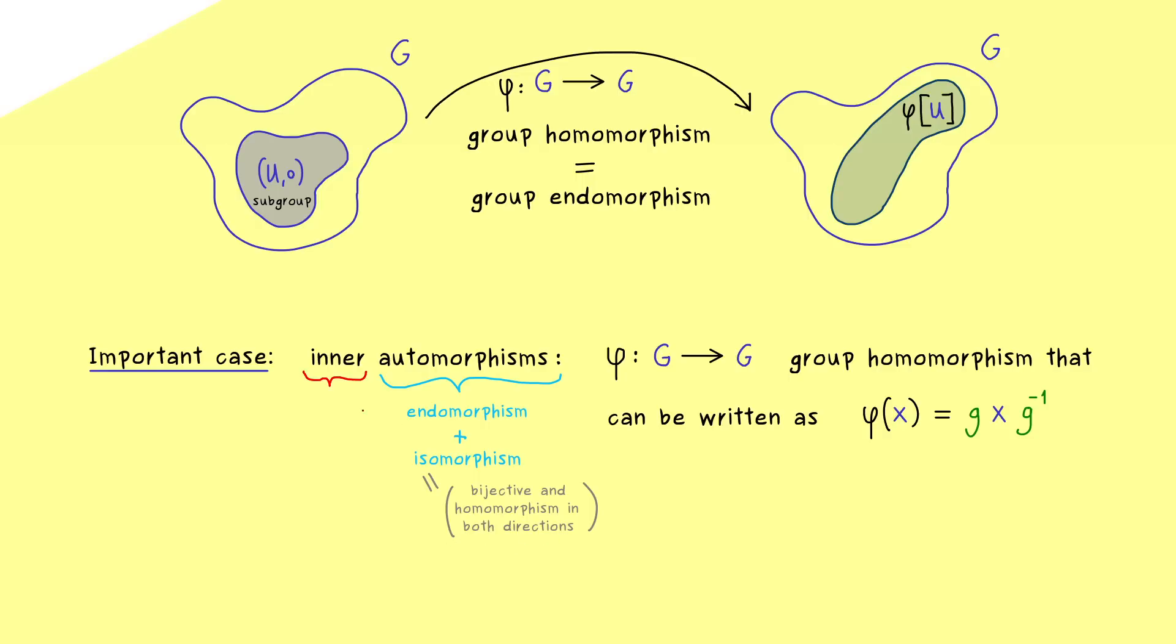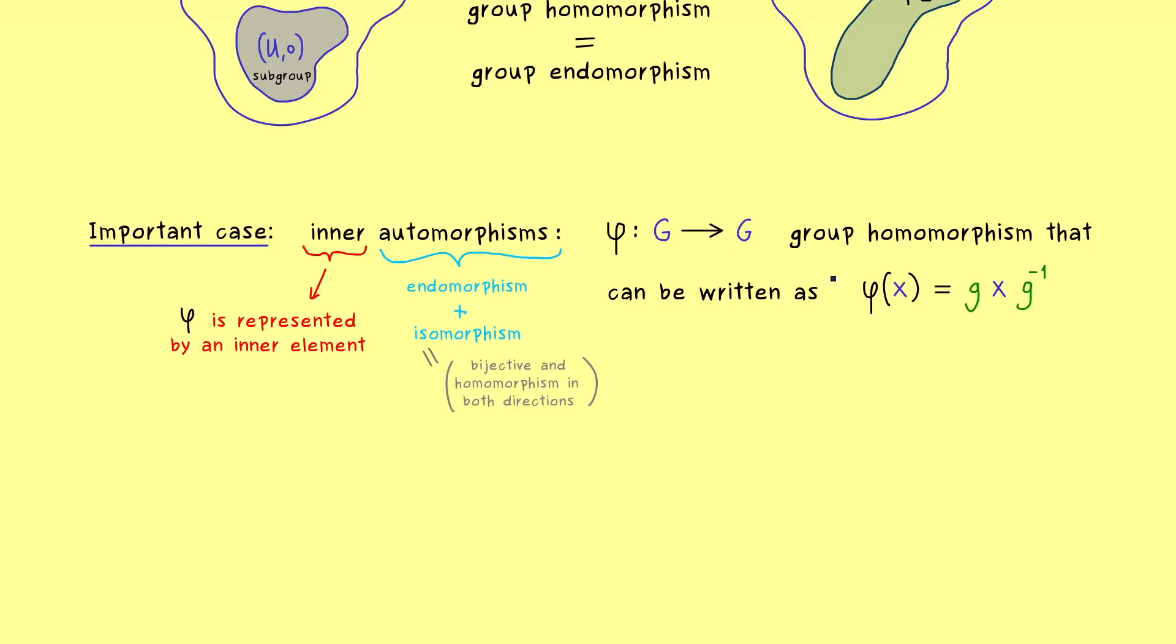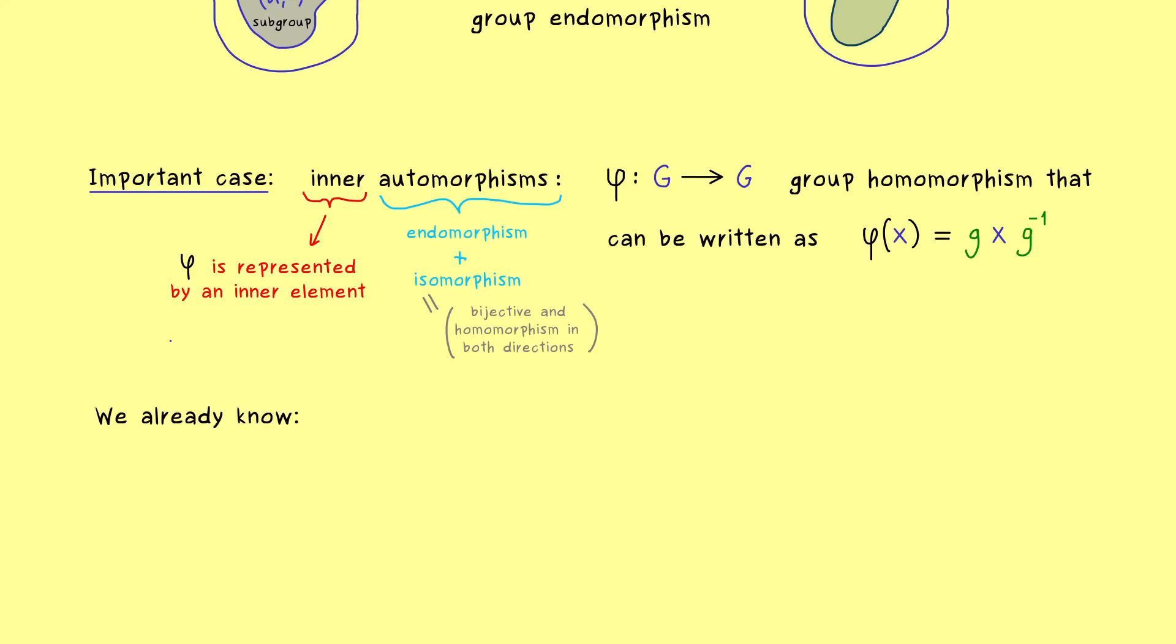We say inner if this automorphism is represented by an element in G. So one could say it's represented by an inner element. Indeed if you give me this element g I can construct the whole homomorphism φ. And this is the reason why these automorphisms are so important, because we can use everything we know for the maps inside the group G itself.